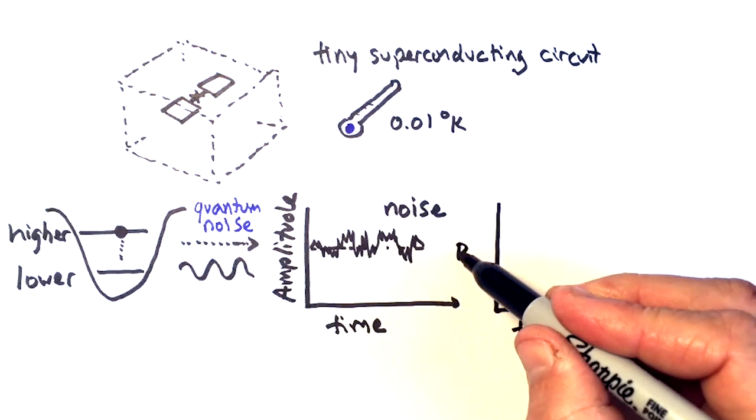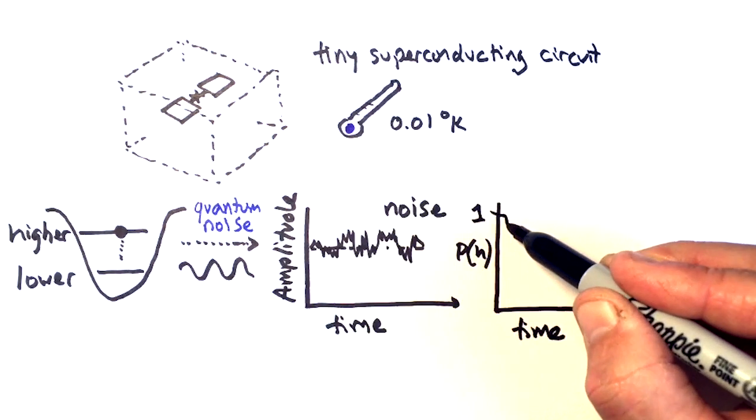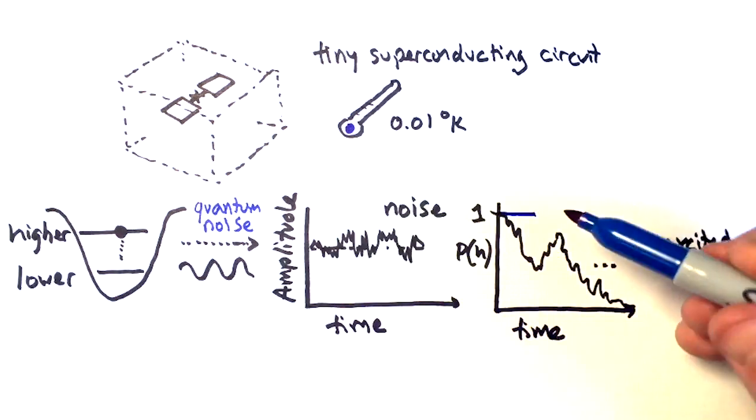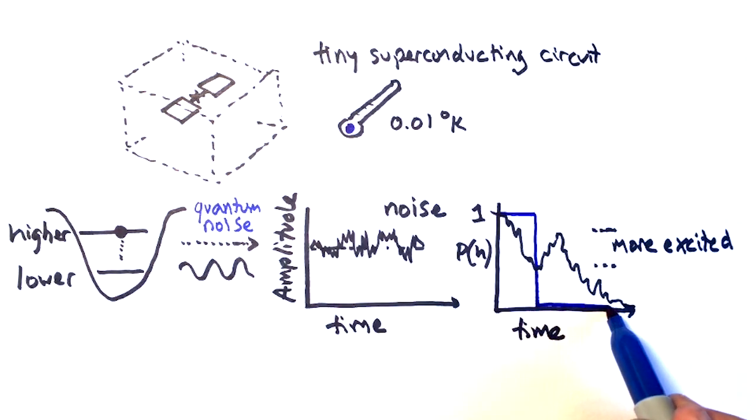It carries complementary information about the state of our superconducting circuit, how the probability of the circuit being in a higher energy or lower energy state evolves in time. And this noisy evolution exhibits peculiar features where the circuit can actually get more excited when it decays. This is very different from the quantum jump evolution we saw with single photons.